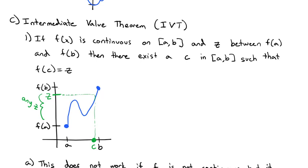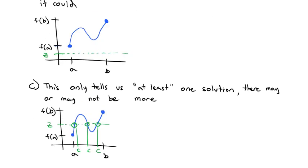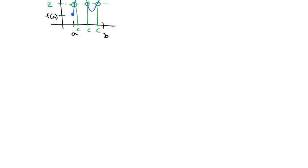So that's really what this intermediate value theorem is trying to say is if f of x is continuous and our z is somewhere between those y values of f of a and f of b, then there exists at least one c such that when we plug c into the function we get z for a solution. How do we use this? Well, here's how we use this. We use this to show that we do have solutions to functions even if we can't solve them.